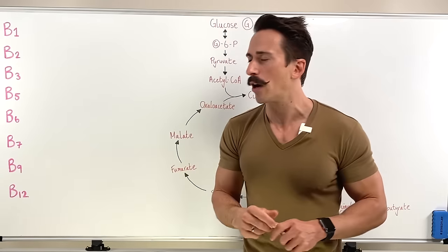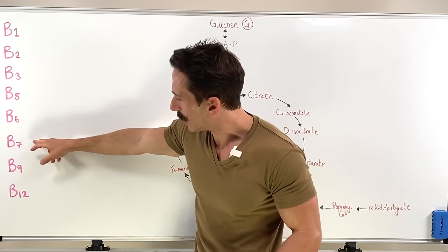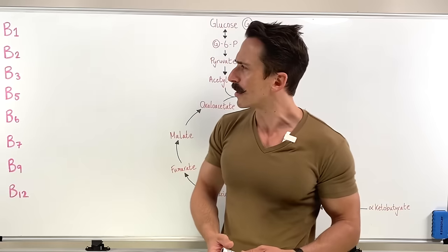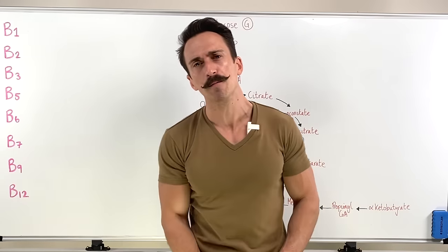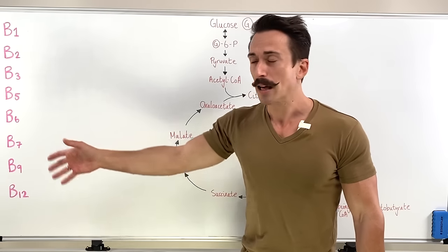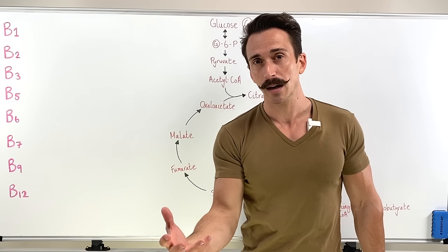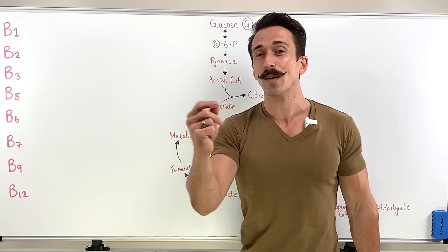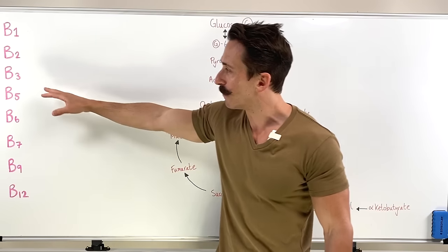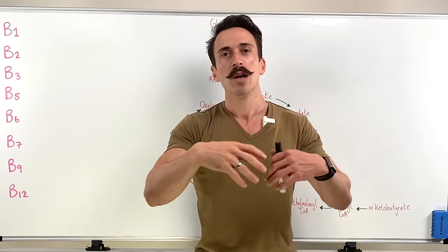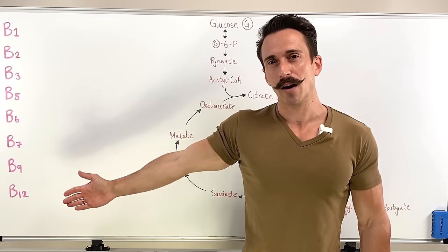When it comes to the B vitamins, we've got B1, 2, 3, 5, 6, 7, 9, and 12. You're probably thinking — what happened to 4, 8, 10, and 11? There were those B vitamins, but they got removed because they no longer fit within the definition of a B vitamin — the main criterion being that we can't synthesize it ourselves. It was found that most of those, like B4 and B10, we could synthesize ourselves, so they were removed. These, then, are our water-soluble B vitamins.